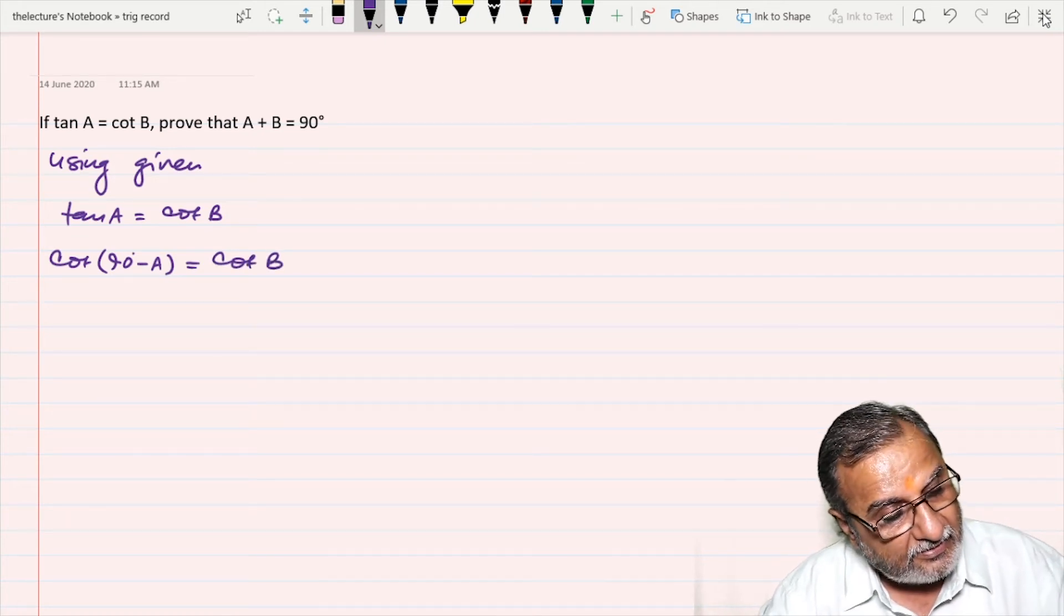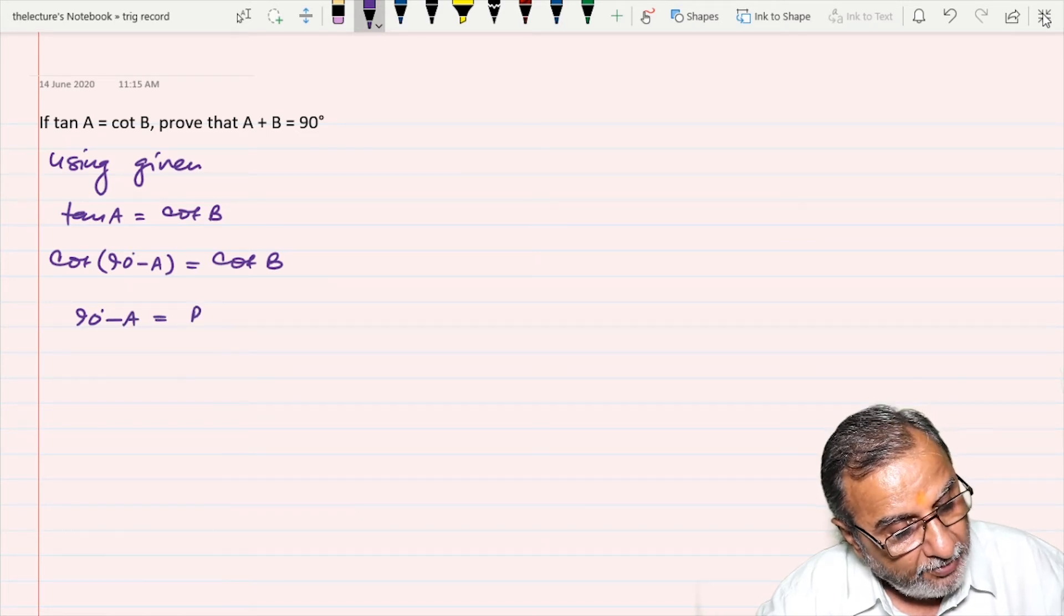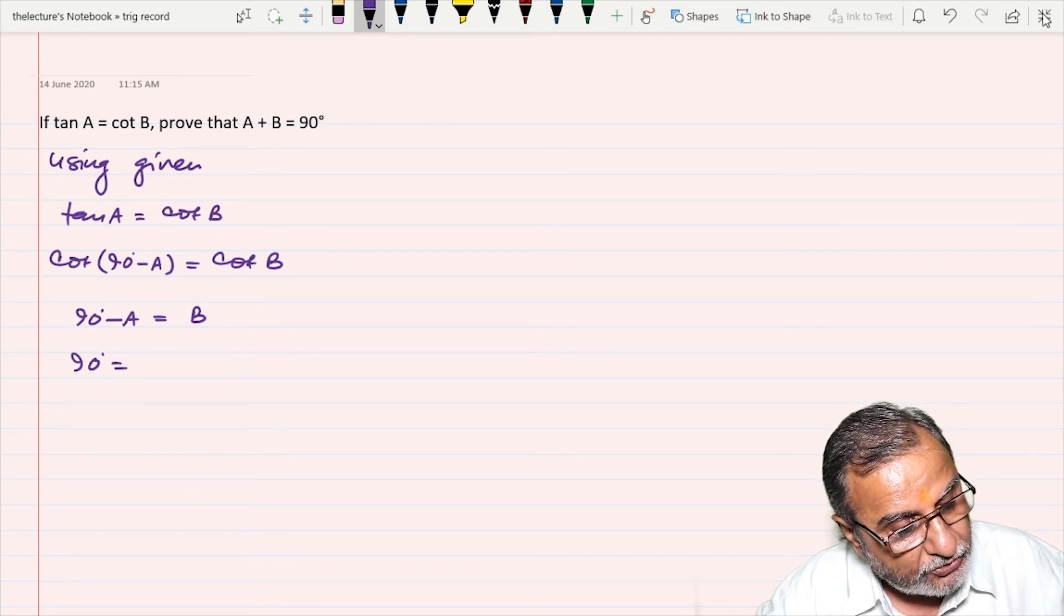So compare the angles: 90 degrees minus A equals B, and 90 degrees equals angle A plus angle B.